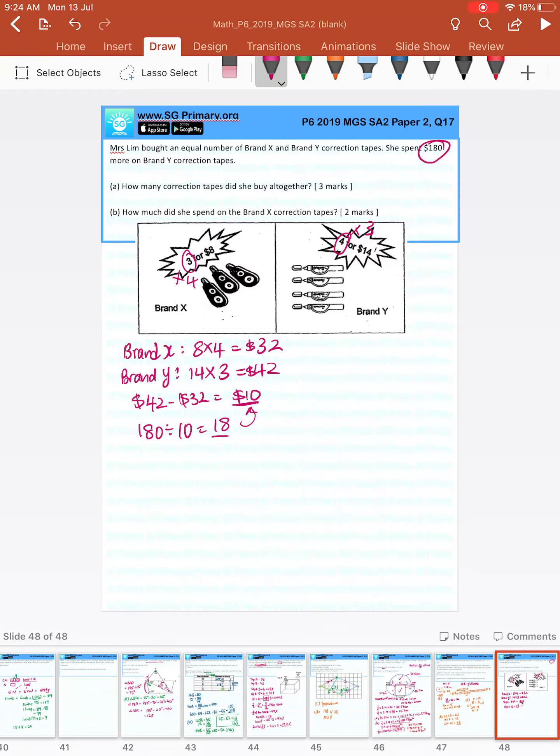So which means from Brand X, we need to take 12 times 18. From Brand Y, also 12 times 18. 2, 1, 6, 2, 1, 6. This was the number of correction tapes she bought all together, which is 432.